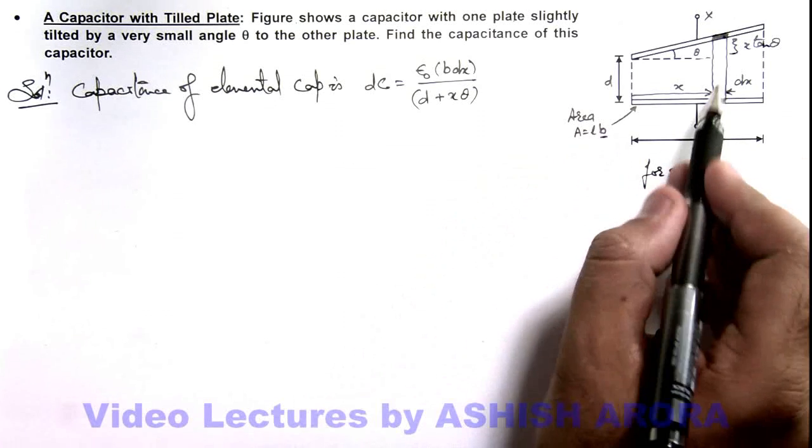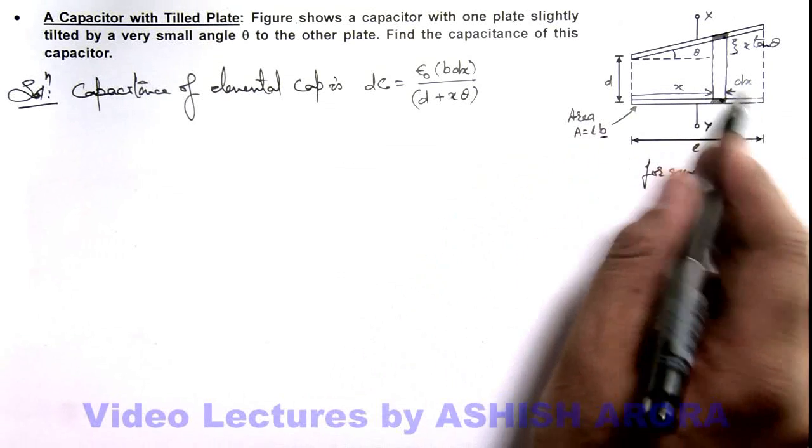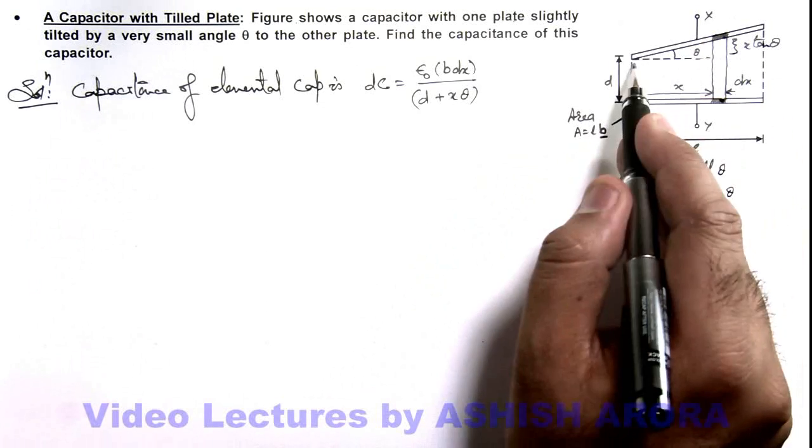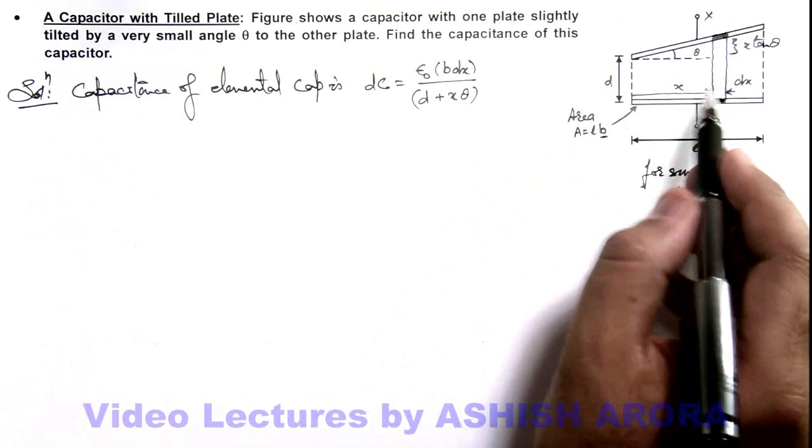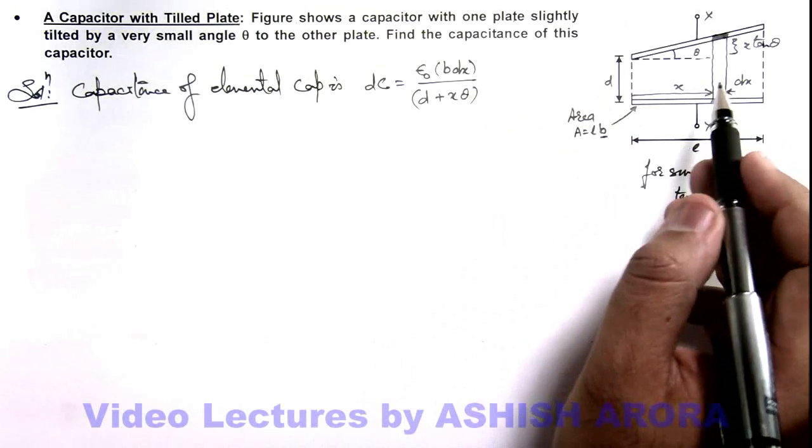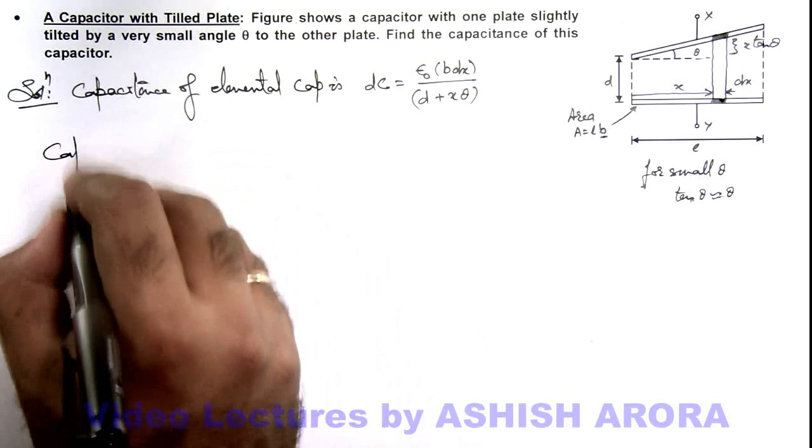Now all such capacitors are connected in parallel across these two plates, as the upper plates are connected and lower are connected, they'll always be at the same potential. And all such dc's can be considered in parallel.